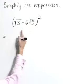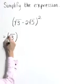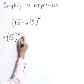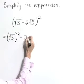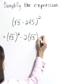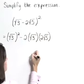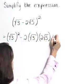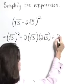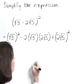So this product is going to take the form of our first term, (√3)², minus 2 times the product of our first term, √3, and our last term, 2√5, plus that last term, (2√5)².